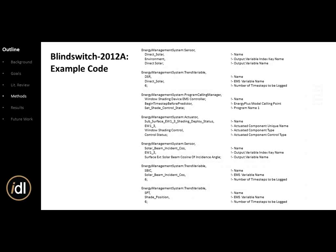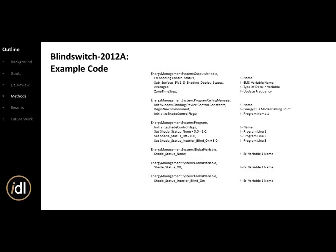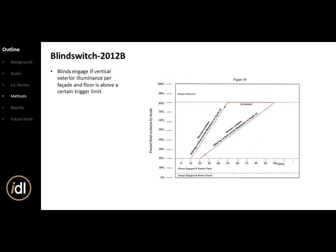Here's some example code. The EnergyPlus Energy Management System is a very specific way of controlling different aspects of the simulation. You put a program in, it runs through every line of code, sets values, and uses if-then statements in a stacked control decision scheme. Each window has different code, but the EMS program in EnergyPlus is a complex way of creating your own algorithms — that's the key takeaway.